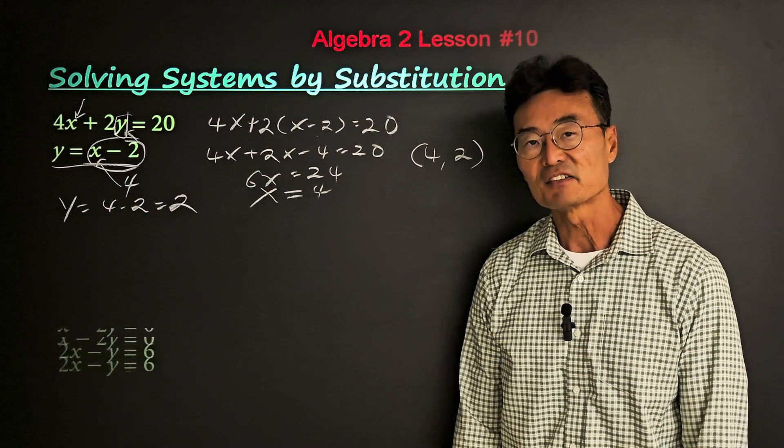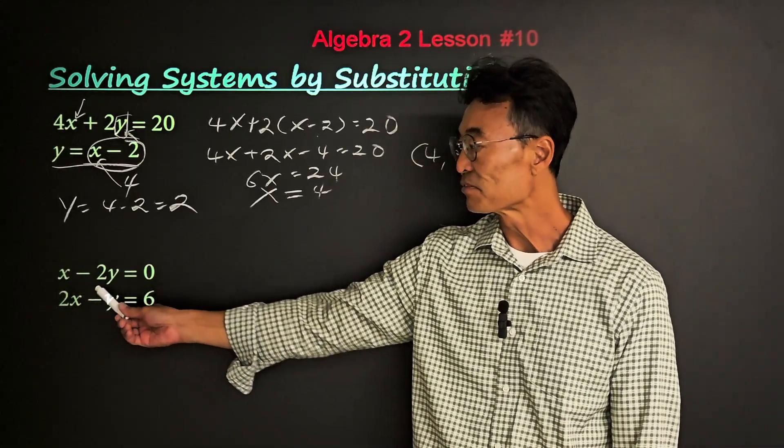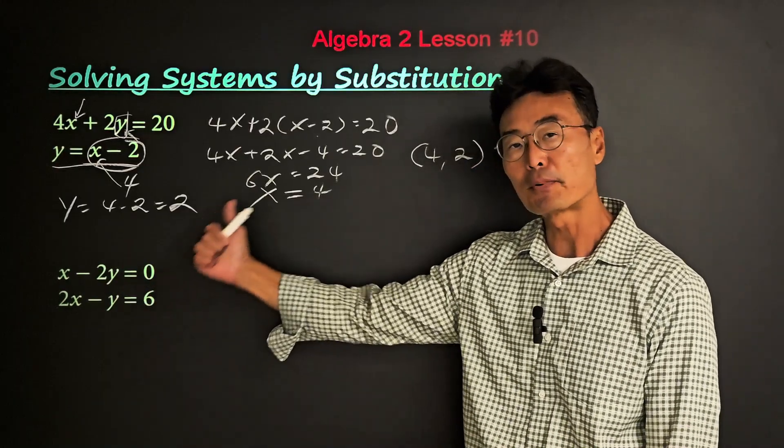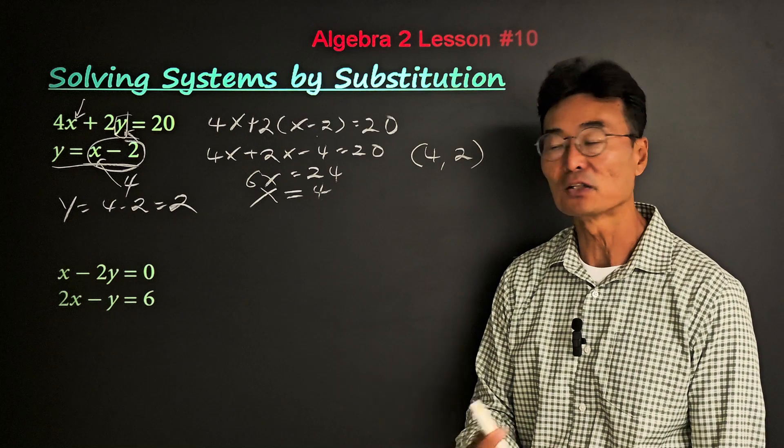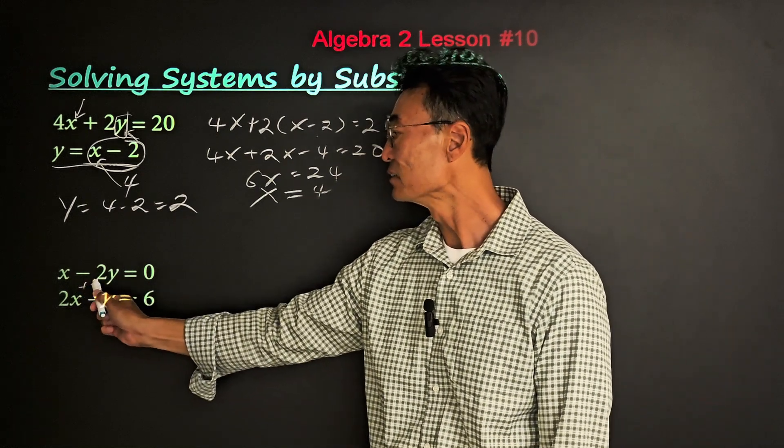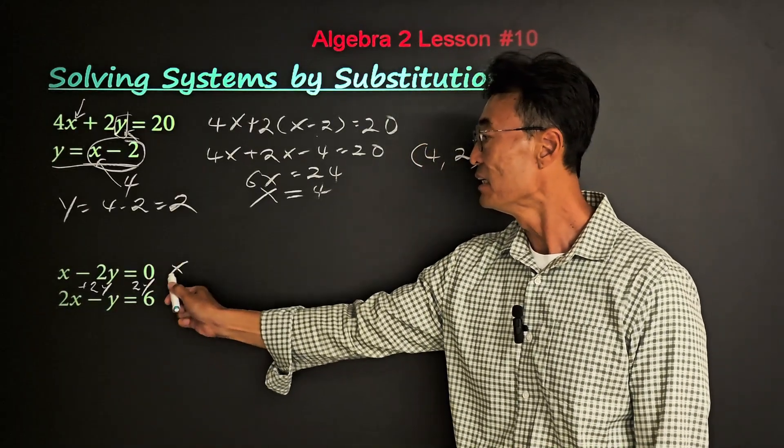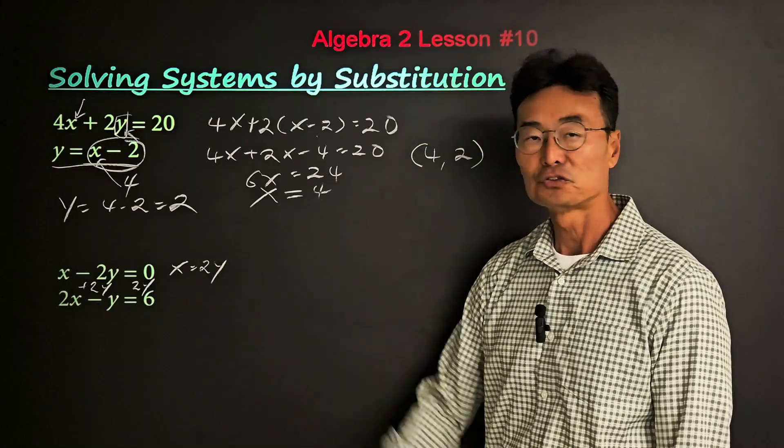In our second example, because the first equation is x minus 2y equals 0, we need to take that negative 2y and bring it to the right side of the equal sign. Add 2y to both sides so that we have x equals 2y.